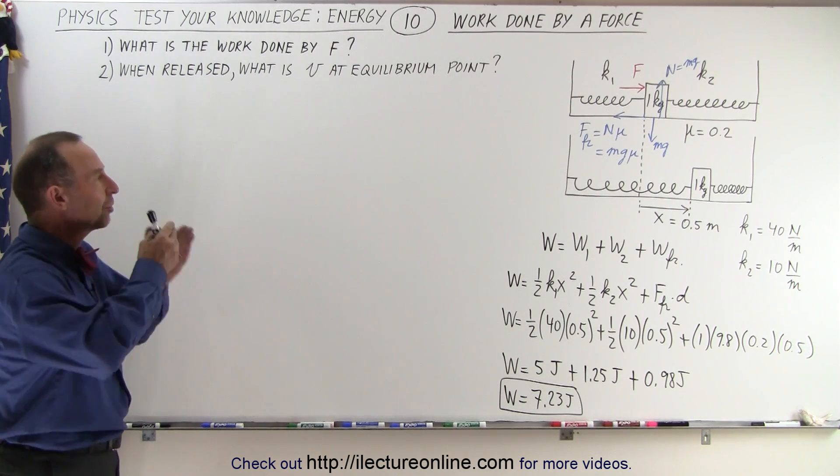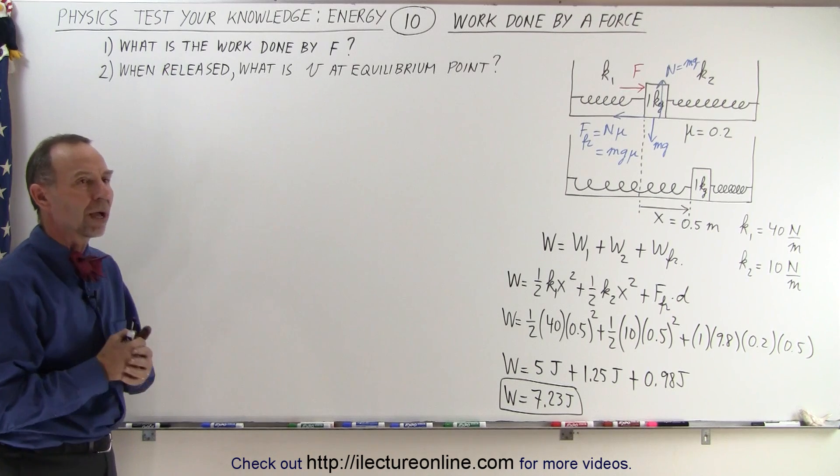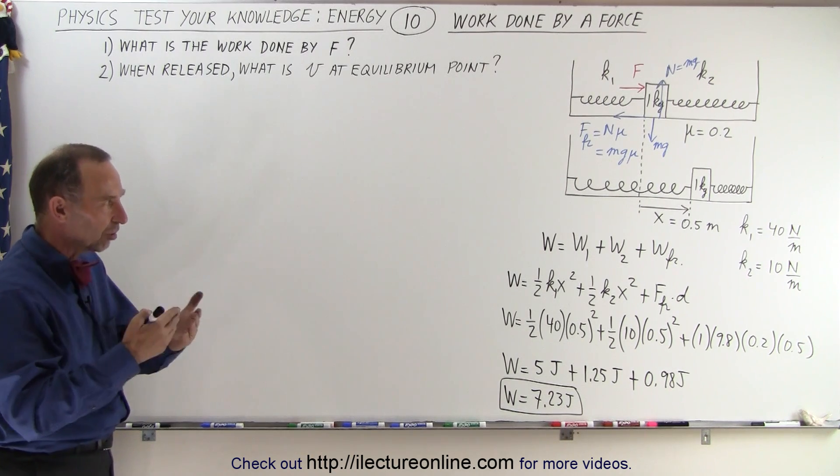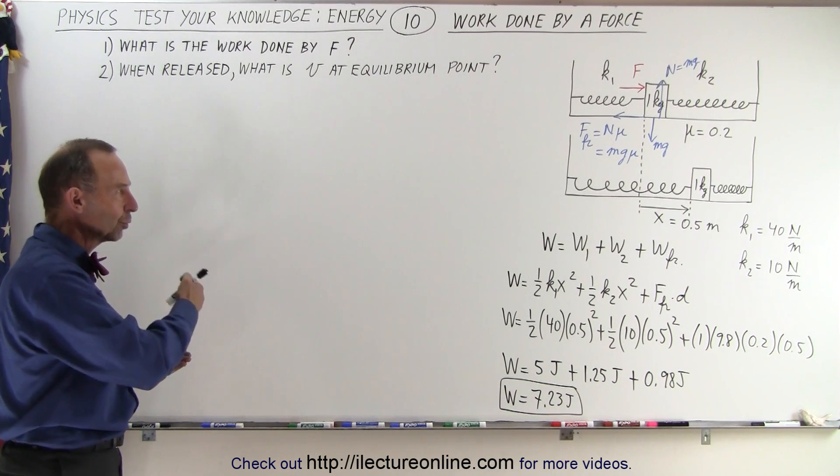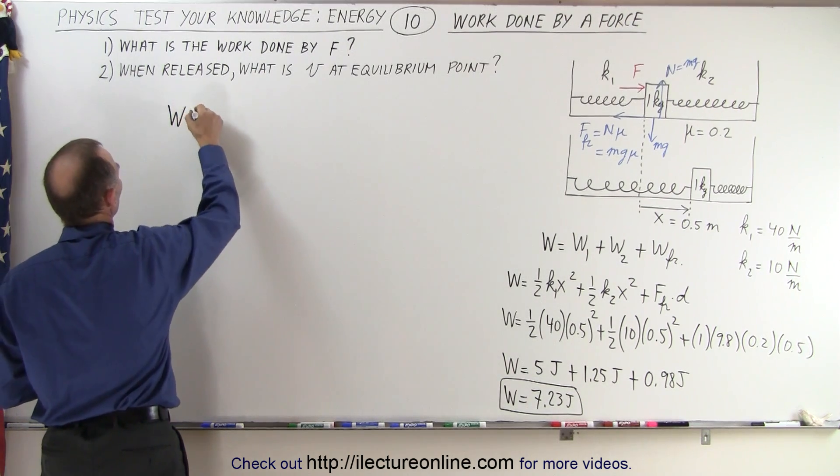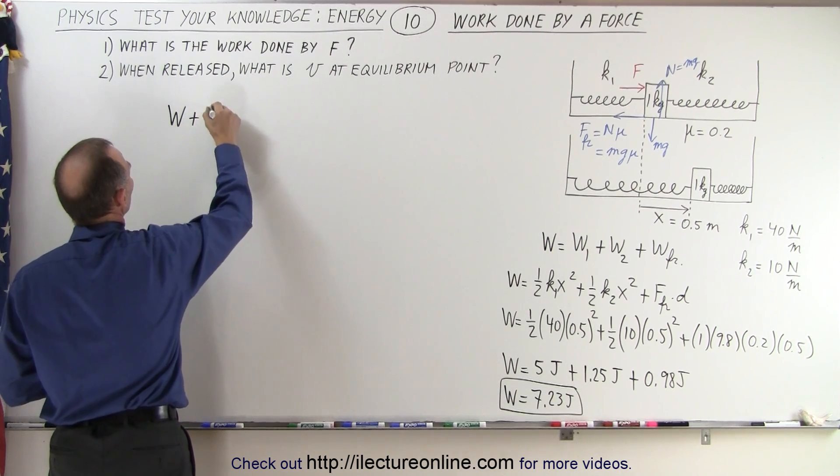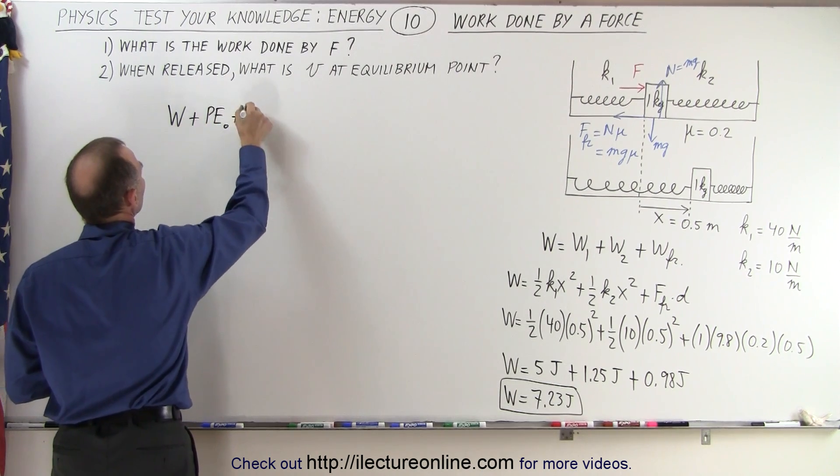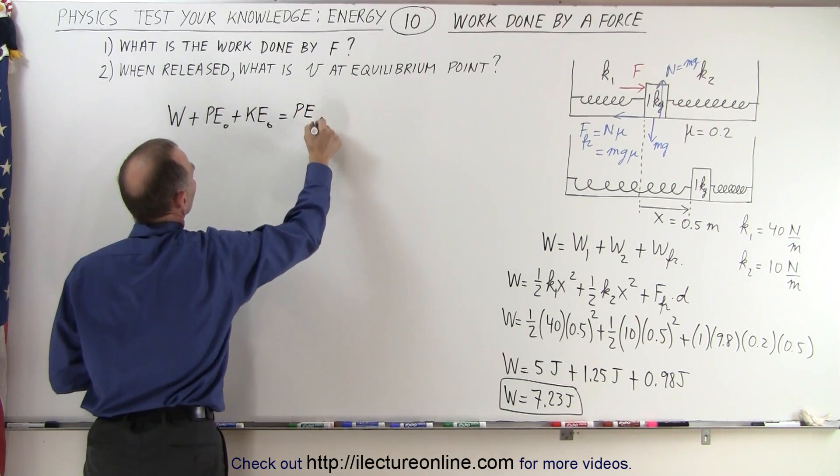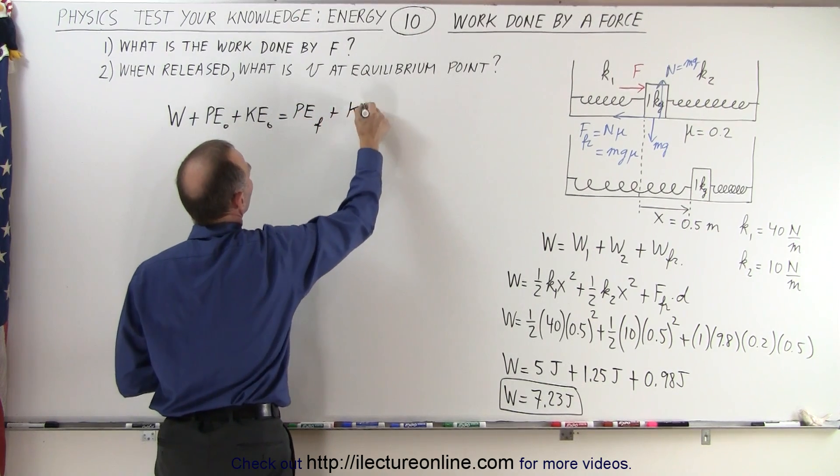So now for part 2, we let go and the block slides in the opposite direction. We know that the initial energy in the system will be converted to kinetic energy, so we can use the energy equation: work put into the system plus the initial potential energy plus the initial kinetic energy is equal to potential energy final plus kinetic energy final plus any energy lost.